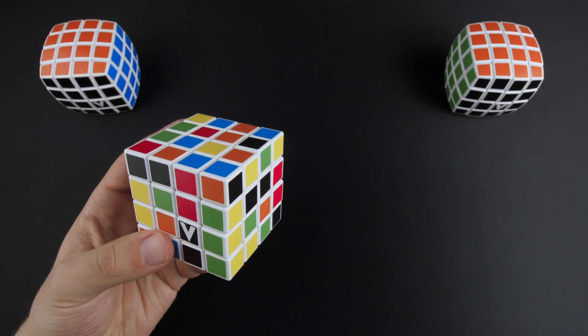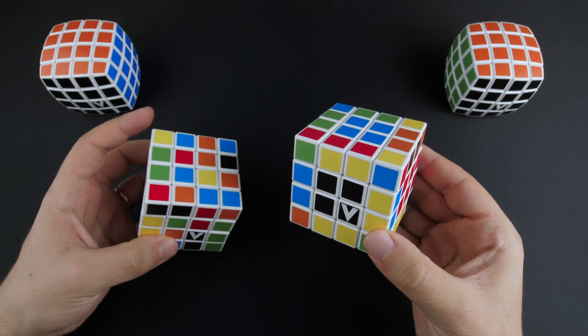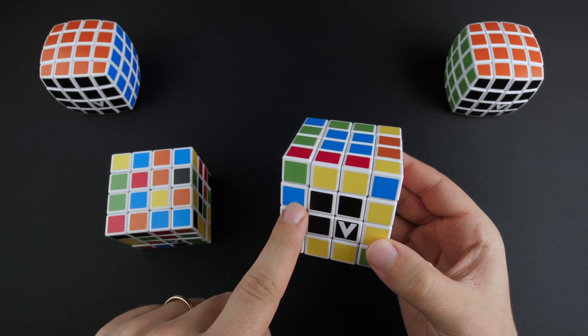This is why, to solve a completely scrambled cube, we will connect all the centers and the edge pieces to make it look like a 3x3. That way we can make use of our 3x3 knowledge.